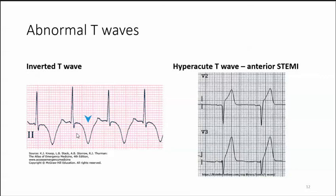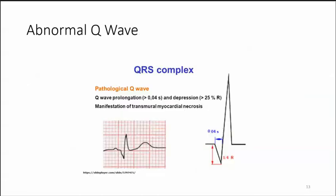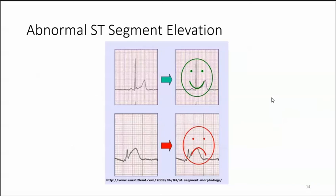Abnormal T waves can be inverted. Deeply inverted T waves are a frequently encountered presentation of ischemia. Hyperacute T waves are an indicator of anterior STEMI — the height of the T wave is greater than half the overall height of the QRS, it is symmetrical with respect to the y-axis, and the base of the T wave broadens. Regarding ST elevation shapes: a concave ST elevation, which has a smiley face appearance, is usually benign, particularly in an otherwise healthy asymptomatic patient. A convex ST elevation is more often associated with an acute injury pattern.